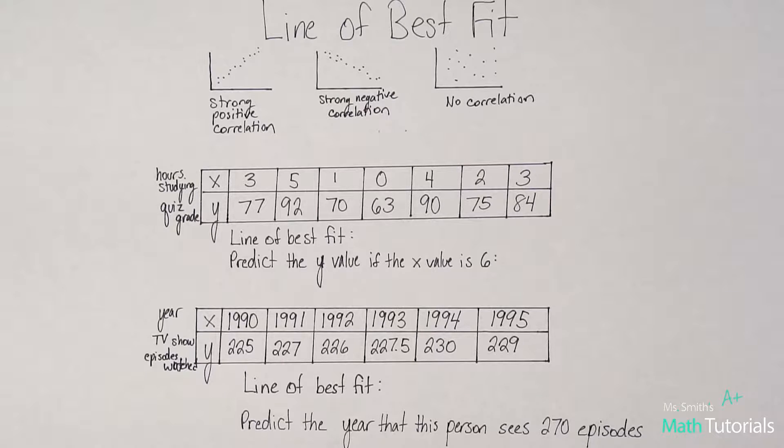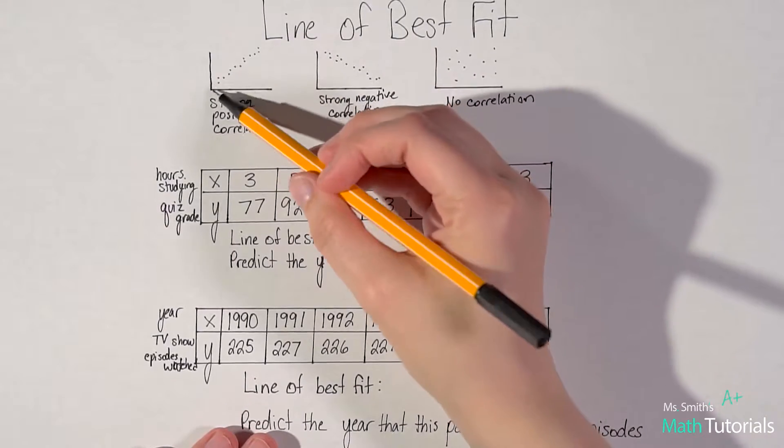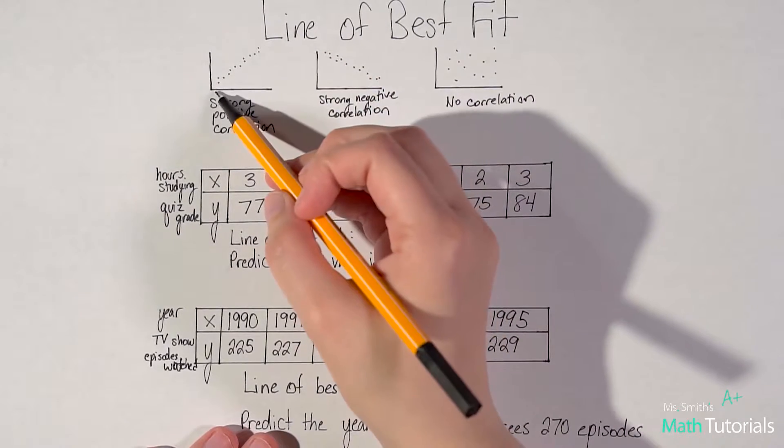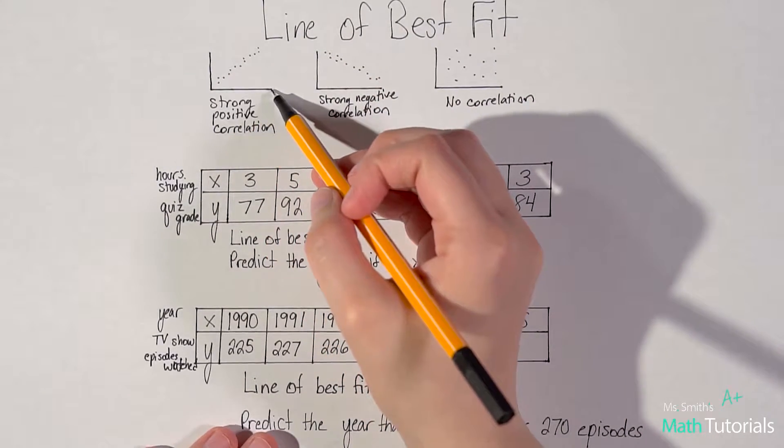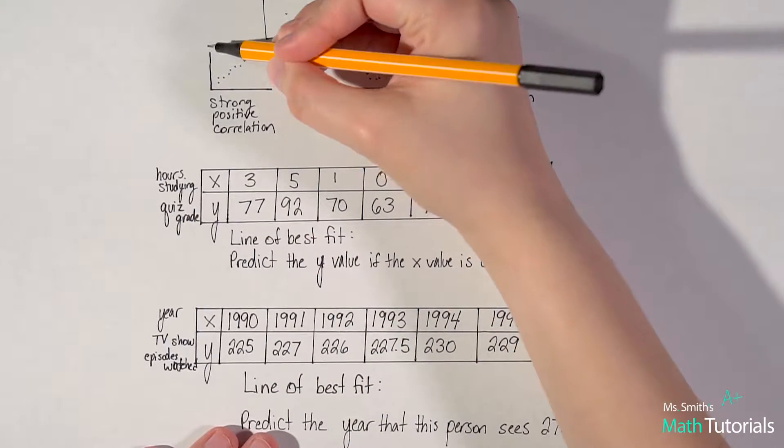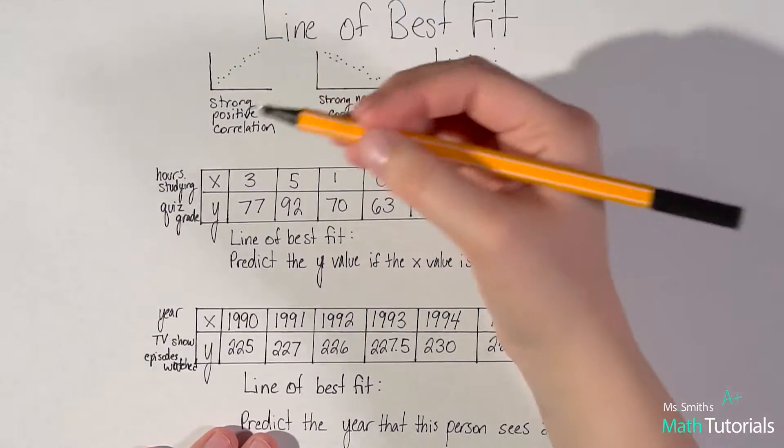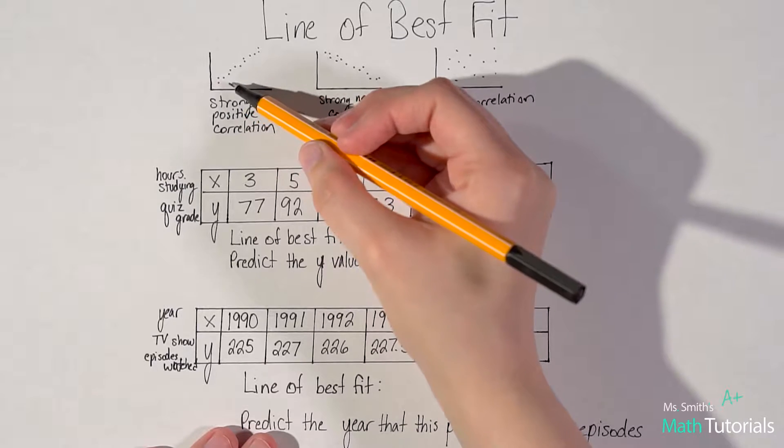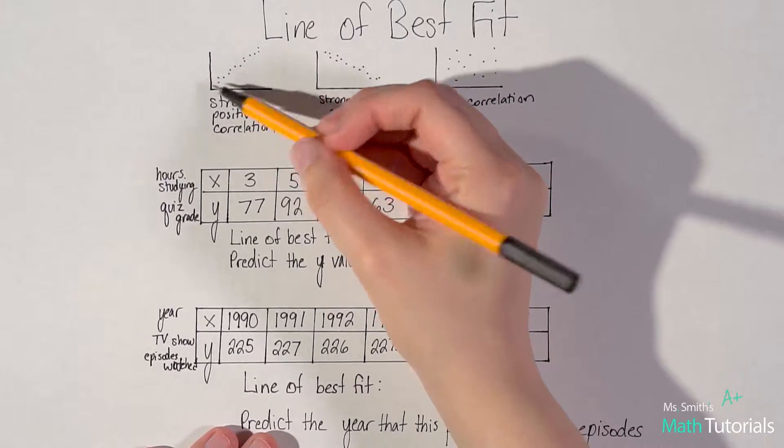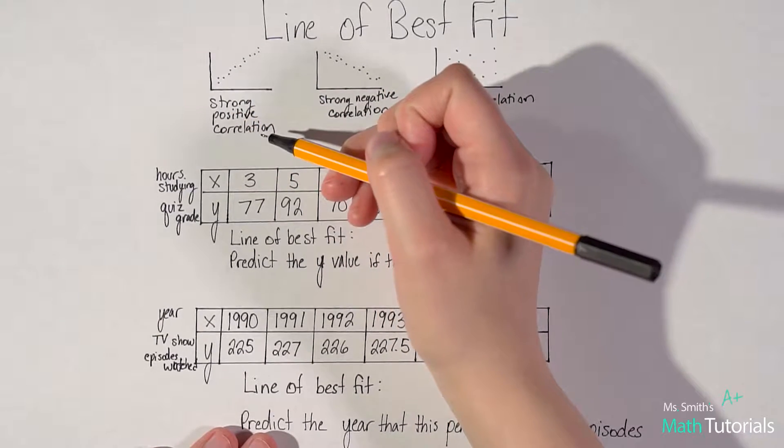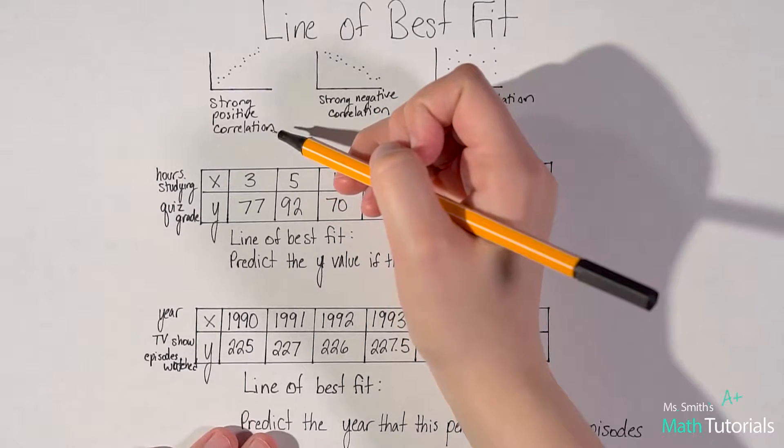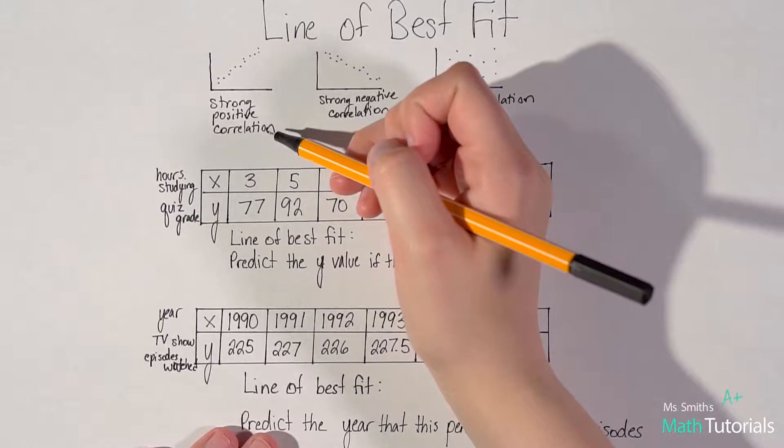Essentially, what that means is we could have a bunch of data points that fall on a chart. Let's say this is hours spent shopping versus money spent. Typically, the longer you spend shopping, the more you might spend. Maybe that's not a great example for a strong positive correlation, but for some people, I think it is.